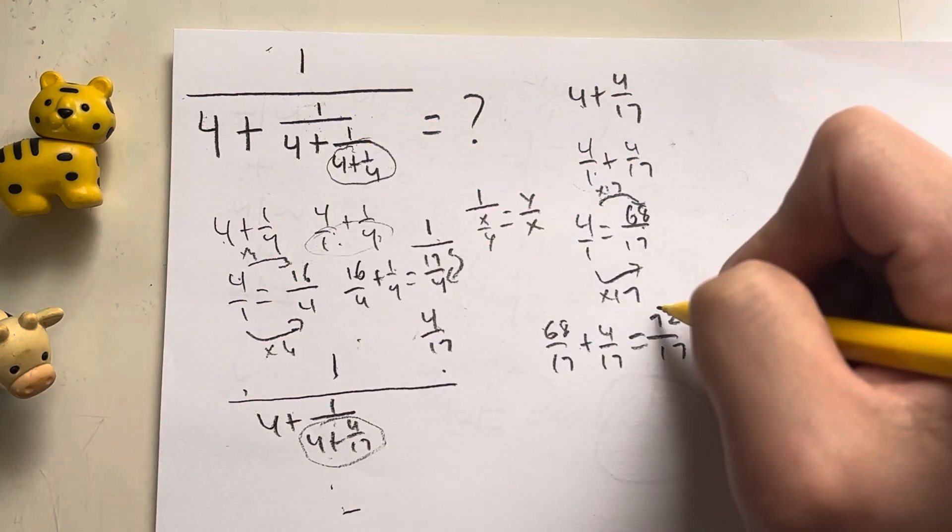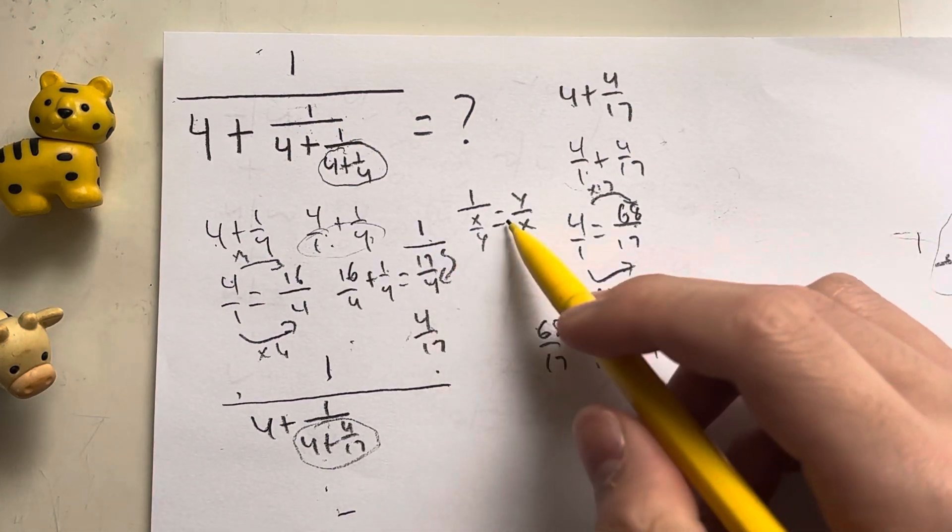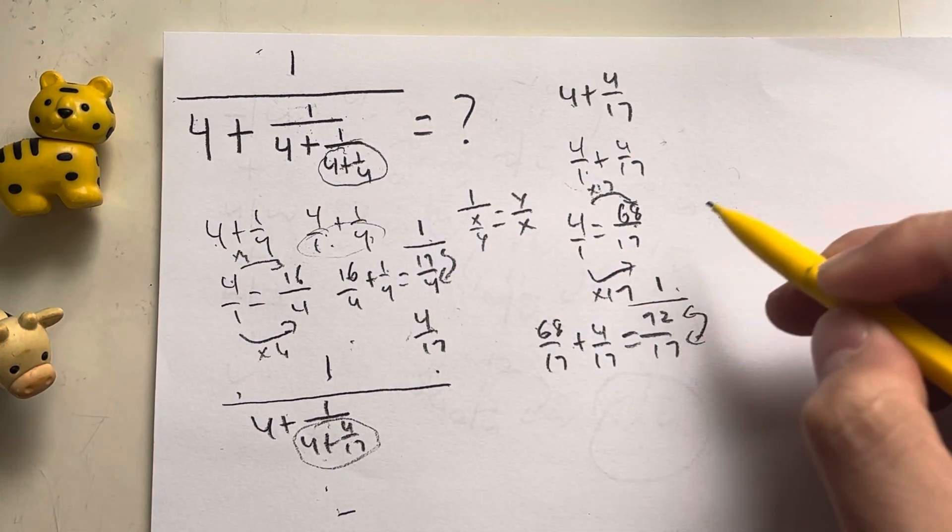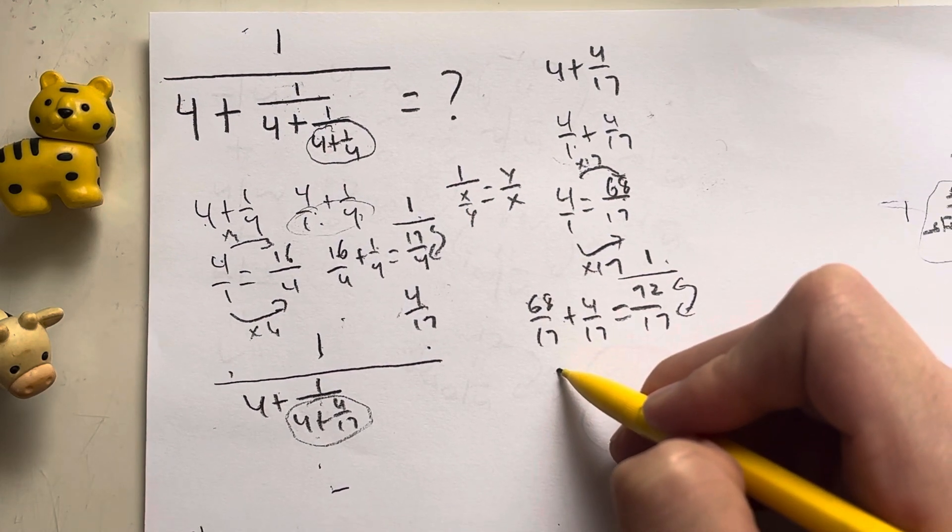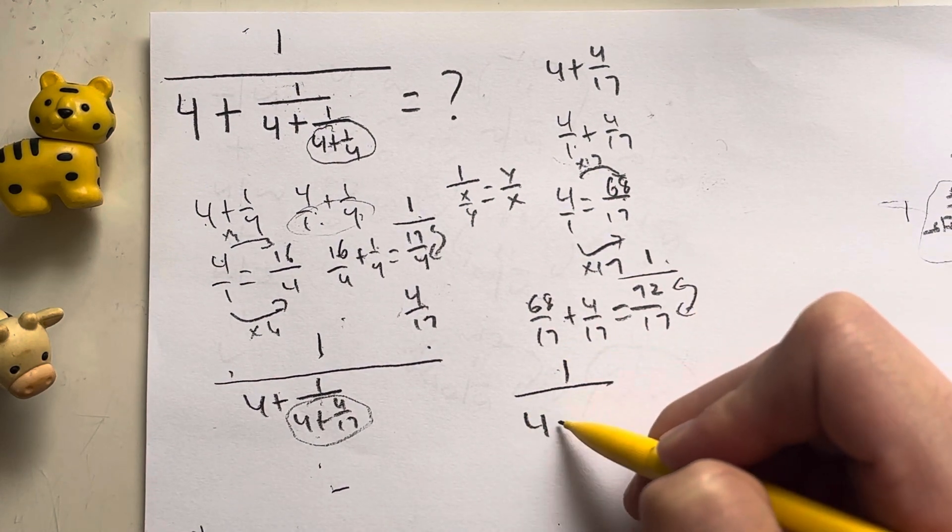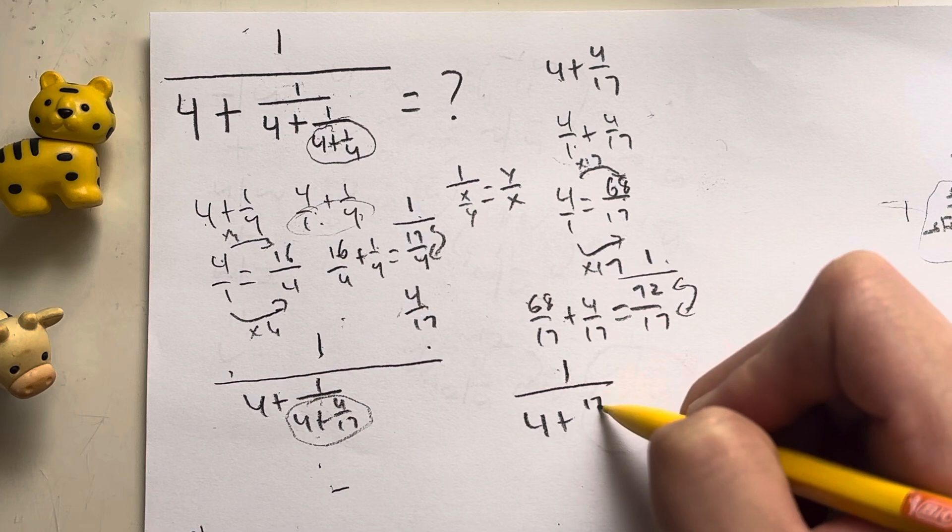This entire thing is over 1 again. So remember, anything over 1, we just have to flip it. So this entire expression becomes 1 over 4 plus 17 over 72.